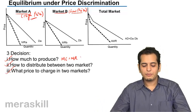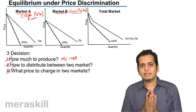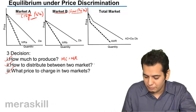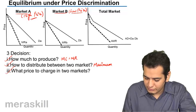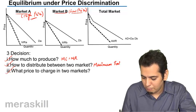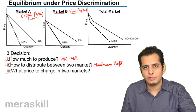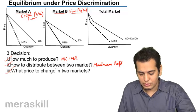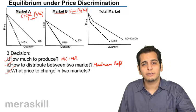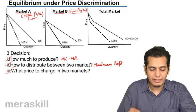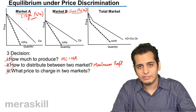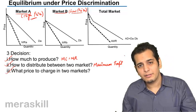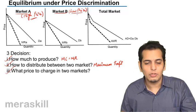He will try to distribute goods such that in both markets he is getting maximum profit. Distribution would be in such a way that profit is maximum taken both markets together. The third question is what price to charge: in the market where elasticity is less (inelastic), he will charge a higher price; and in the market where elasticity is high, he will charge a low price.